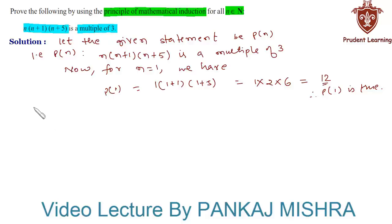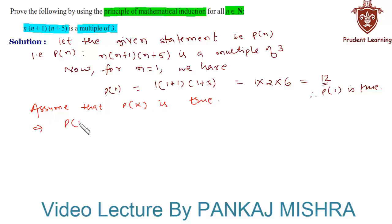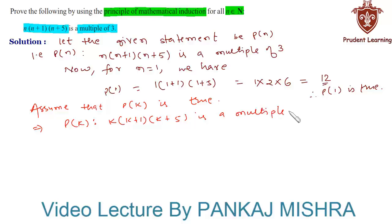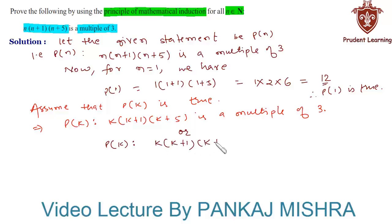Now we assume that P(k) is true for some positive integer k, which means we have P(k) such that k times (k+1) times (k+5) is a multiple of 3. We can also write this as k(k+1)(k+5) = 3m, where m is an integer. Let us call this equation 1.